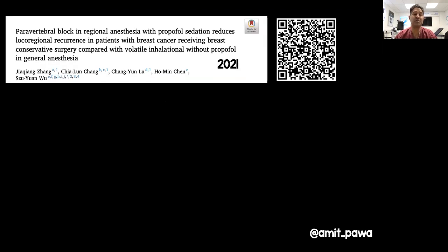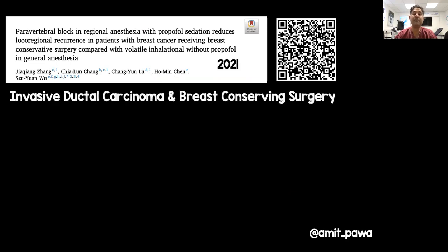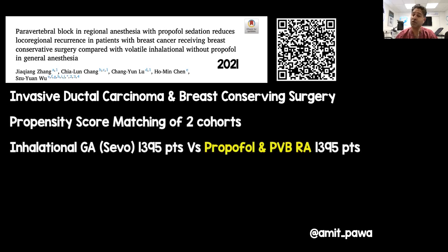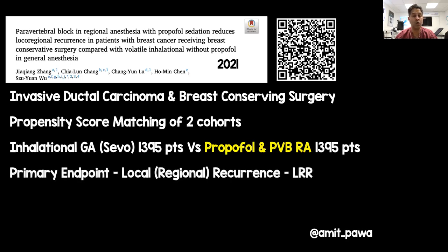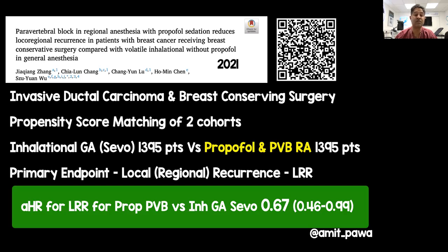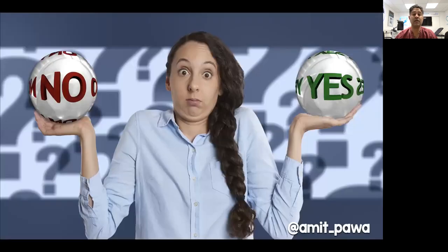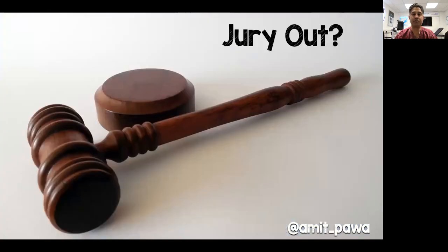One of my current fellows, Matt, pointed me toward this 2021 paper looking specifically at invasive ductal carcinoma in patients having breast-conserving surgery — lumpectomies. Using two cohorts with propensity score matching, nearly 1,400 patients in each group compared inhalational GA with sevoflurane versus propofol sedation with paravertebral block. They specifically looked at local regional recurrence and demonstrated via an adjusted hazard ratio of 0.67 that propofol sedation and paravertebral blocks were associated with reduced local recurrence. Is that the final answer? I don't think so, but there is definitely hope. The jury is still out, but I'm not going to be too despondent.